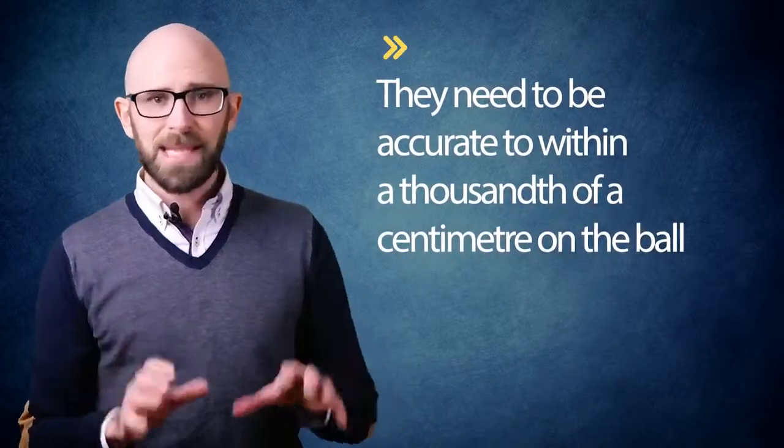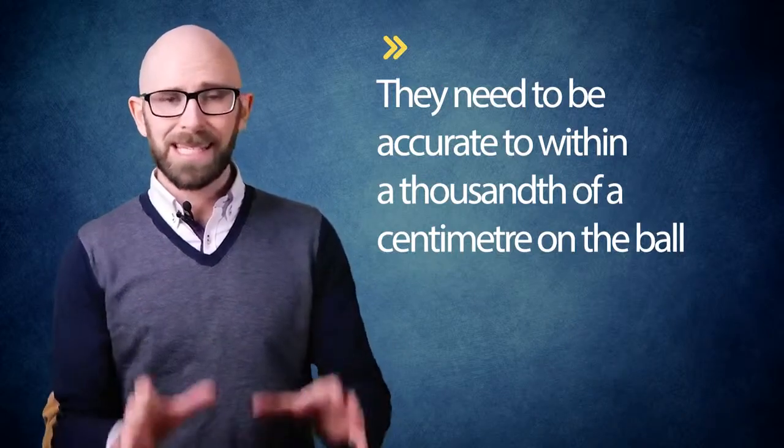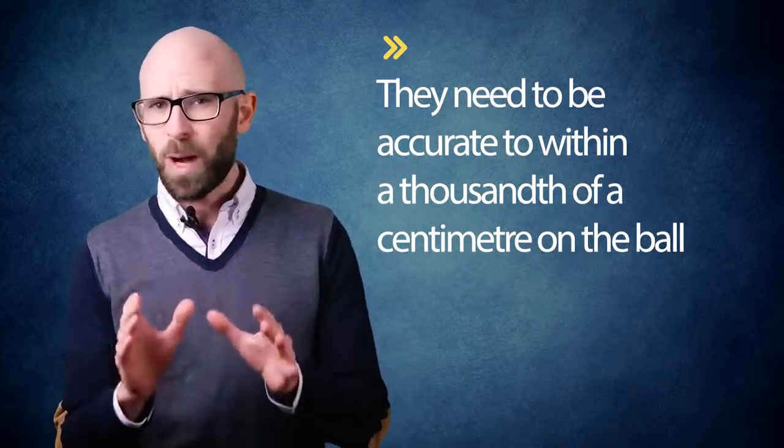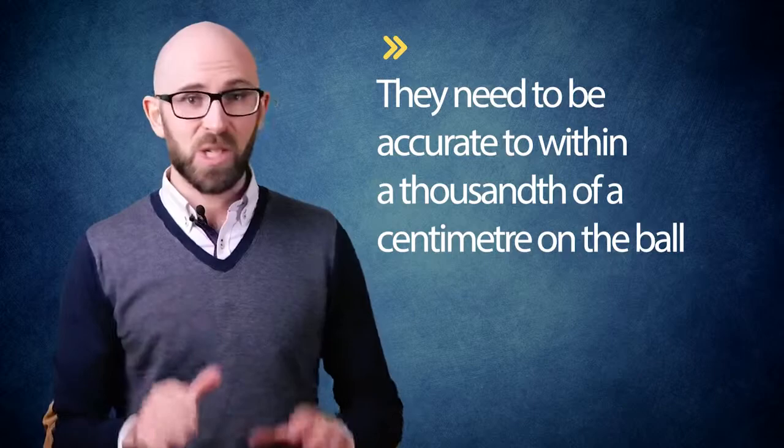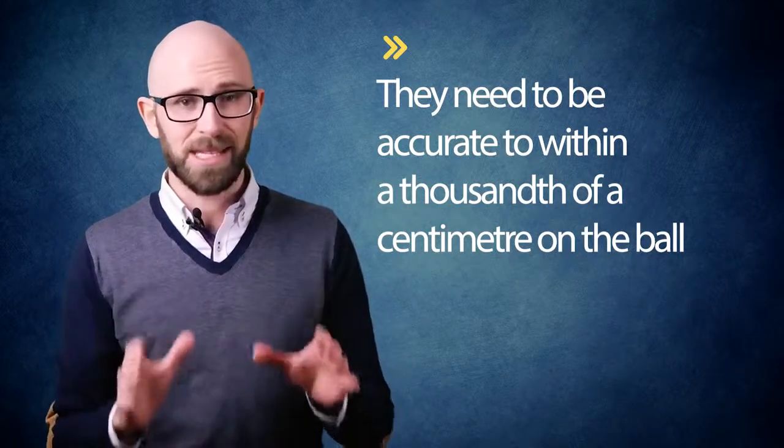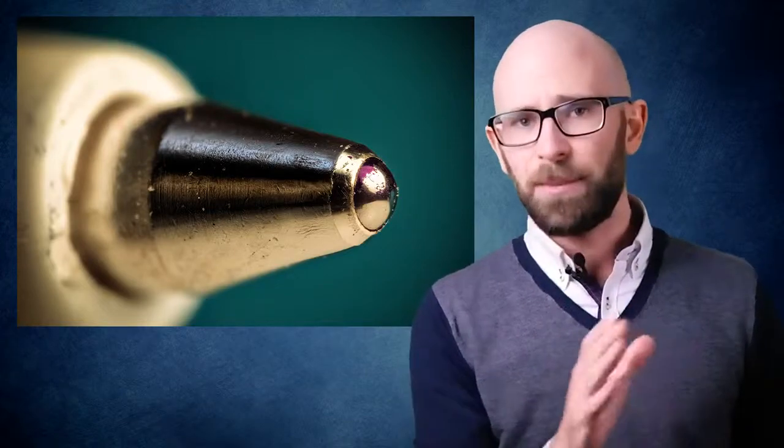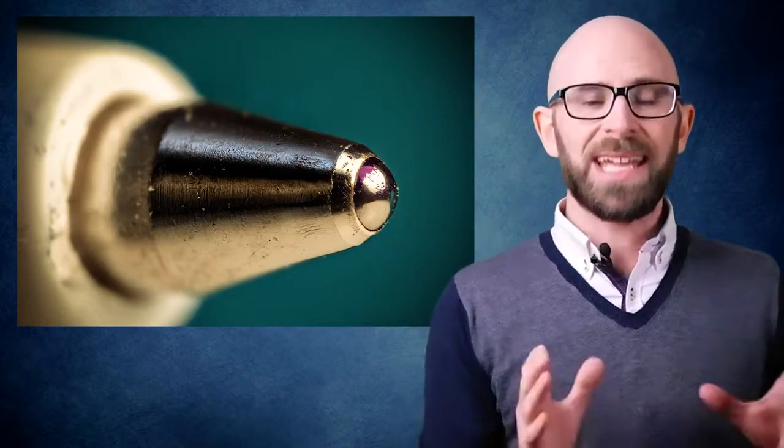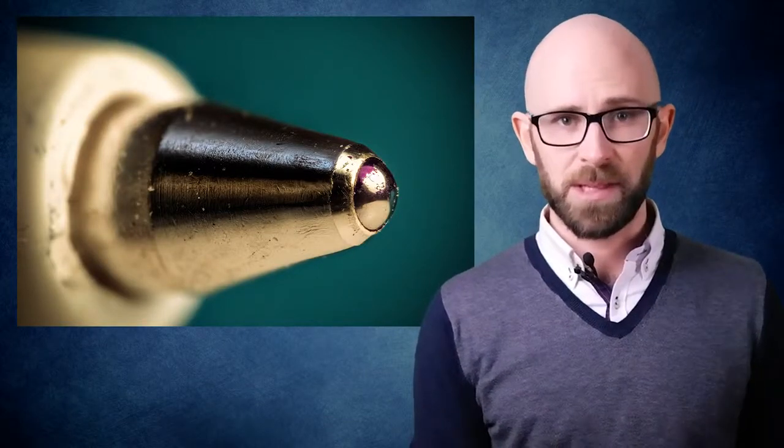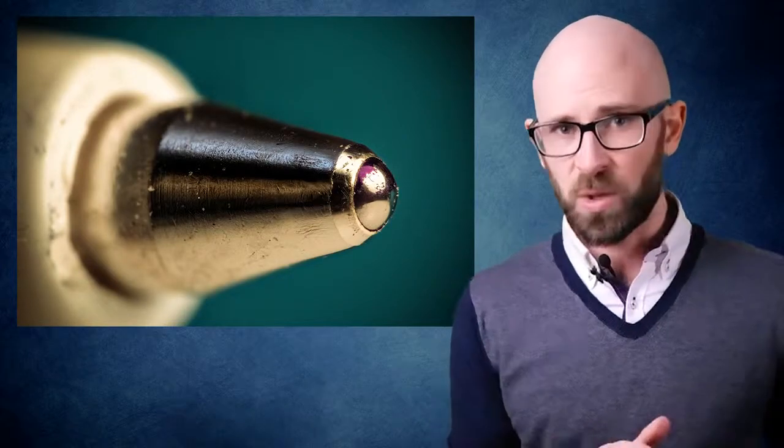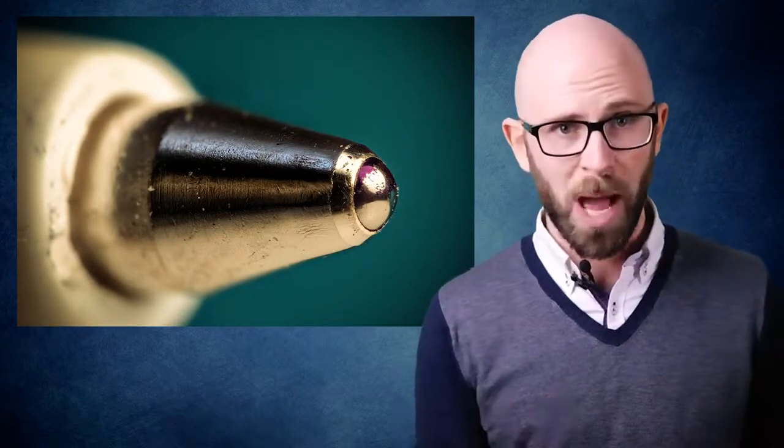The polished ball is then loaded into a socket. Due to the fact that the space available between these two parts is supposed to be virtually, but not quite nil, they need to be accurate to within a thousandth of a centimeter on the ball. If any flaws whatsoever are discovered in the ball bearings during production, it's not uncommon for thousands of others of these balls that were created alongside the flawed one to be destroyed as well.